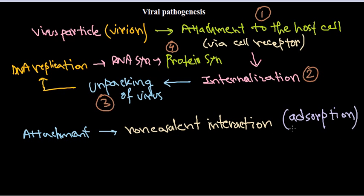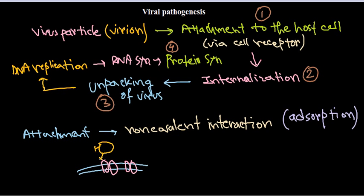If we draw the host cell surface, it is holding receptors on its surface. The virus particle has spikes or outer membrane protein coat coming out. These viral surface proteins interact with the membrane-spanning protein molecules expressed on the host cell, allowing attachment to the host cell. This completes the first step — attachment.